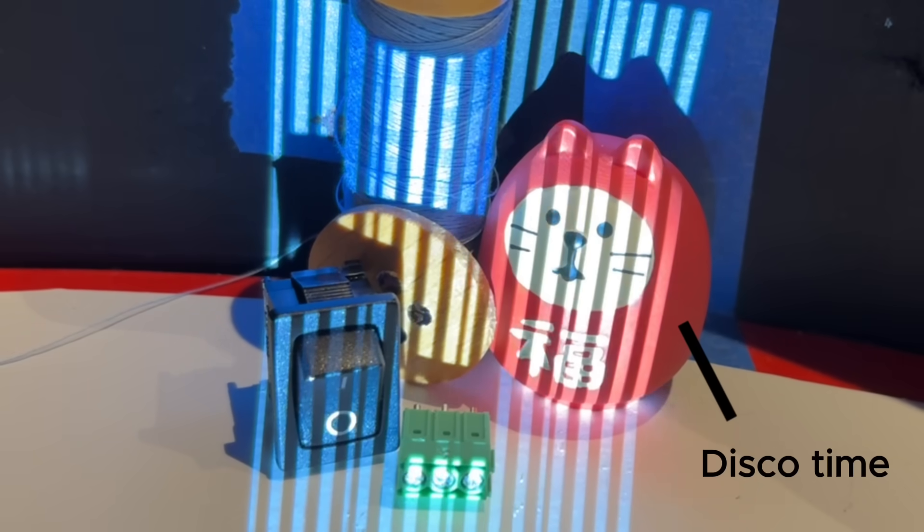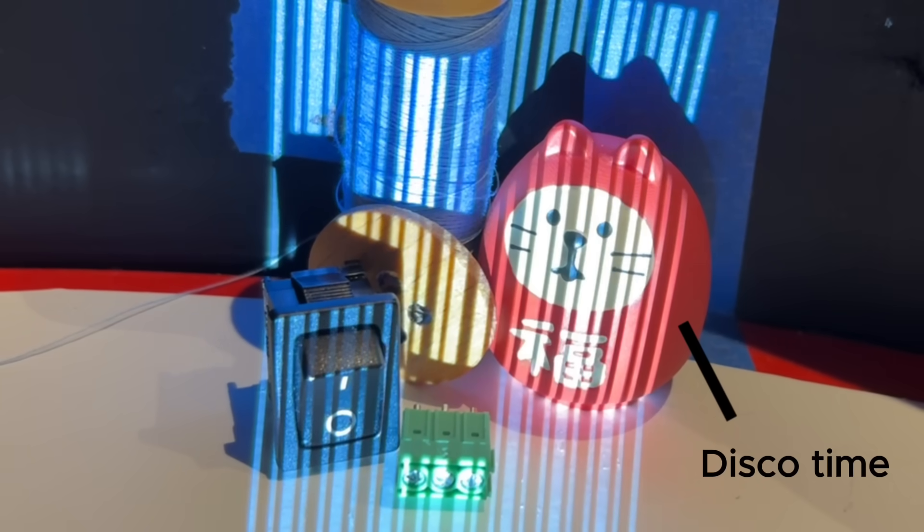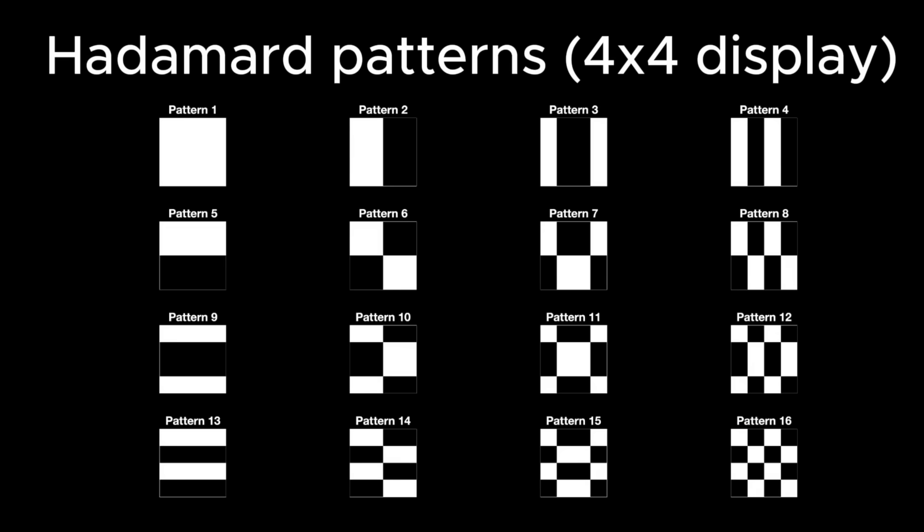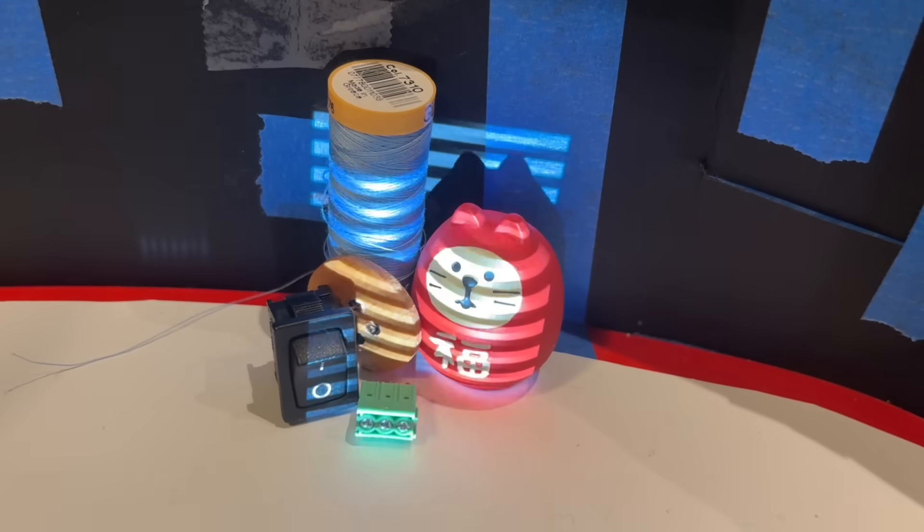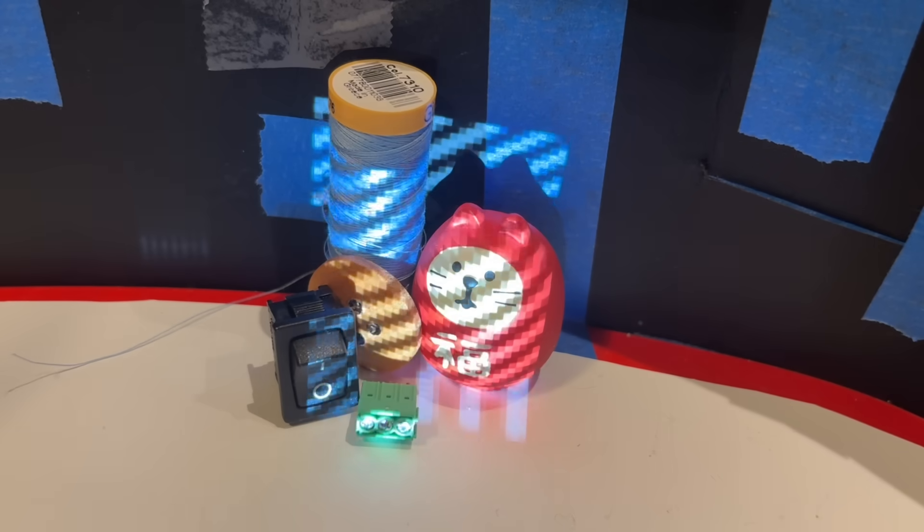The second thing I wanted to change was the illumination patterns. The first system I built used Hadamard matrices, which I hadn't heard of before. The other popular illumination patterns used in compressed sensing are much better known, sinusoidal patterns. That's right, we're going to measure the 2D Fourier transform of the scene using compressed sensing.